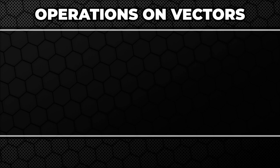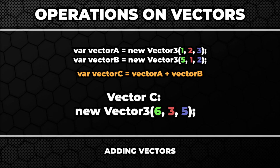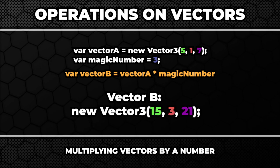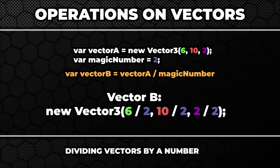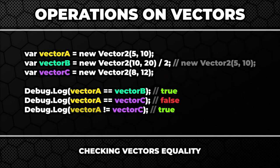Now let's have a look at the most common operations on vectors. Even though Unity is doing all the magic for you, it is worth knowing what's happening. Adding two vectors to each other is extremely easy — you take the vectors and combine their x, y and z components. The most common operation on vectors is multiplying them by a scalar value, meaning a simple number — you take all the components x, y and z and multiply them individually by the number. Dividing the vector by a number works exactly the same way. Of course you can also check if vectors are equal or not — two vectors are equal when their directions and magnitudes are the same.